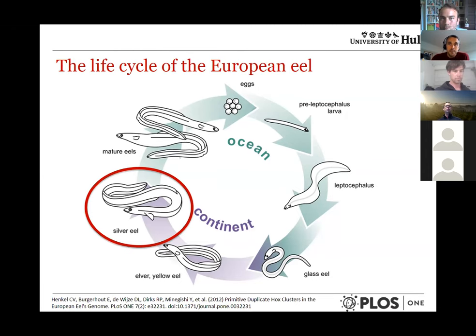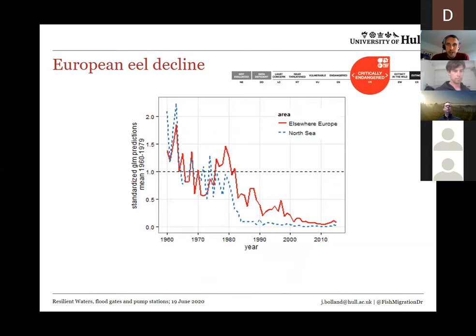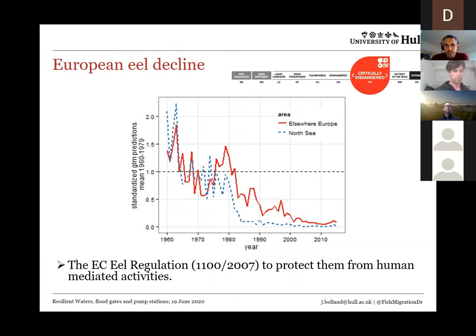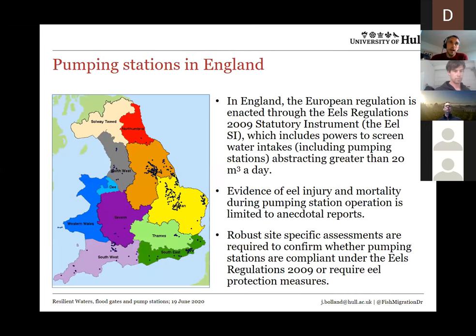For those who don't know about the life cycle of the European eel — they spawn in the Sargasso Sea, migrate up to Europe on the Gulf Stream, then head inland and live in our freshwater systems for 10, 20, 30 years, and then try to leave to go back to the Sargasso. They're having a real hard time right now — they're critically endangered. Since 1980 stocks have plummeted to less than 5% of where they were. Loads of reasons for their decline, and pumping stations and barriers to migration are just one of them. We have specific legislation that requires us to protect them from human-mediated activities.